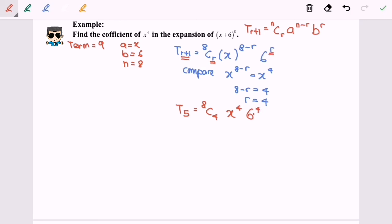So from here, 8 c 4 gives us 70 times x to the power of 4, and then 6 to the power of 4 equals 1296.